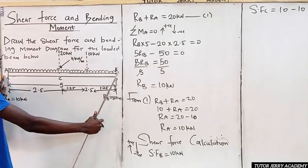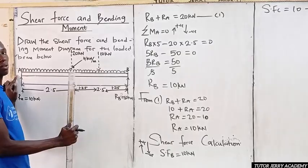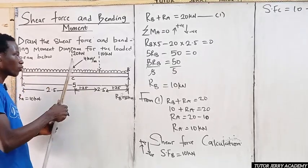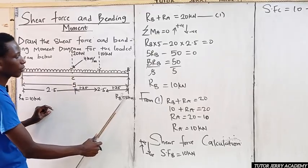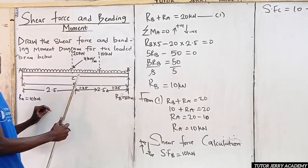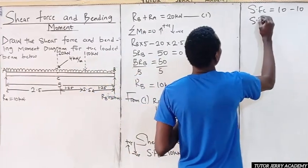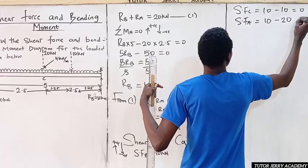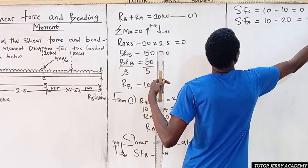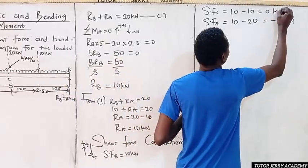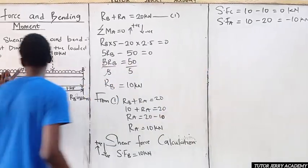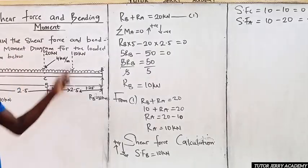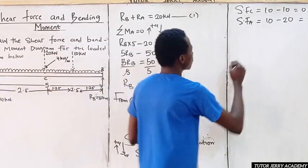To find the shear force at A, we consider the whole length of the beam, where the UDL has been converted to 20 kilonewtons. The shear force at A equals 10 minus 20, which equals minus 10 kilonewtons. From C to A there is no additional load, so the shear force remains constant at minus 10 kN in that region.